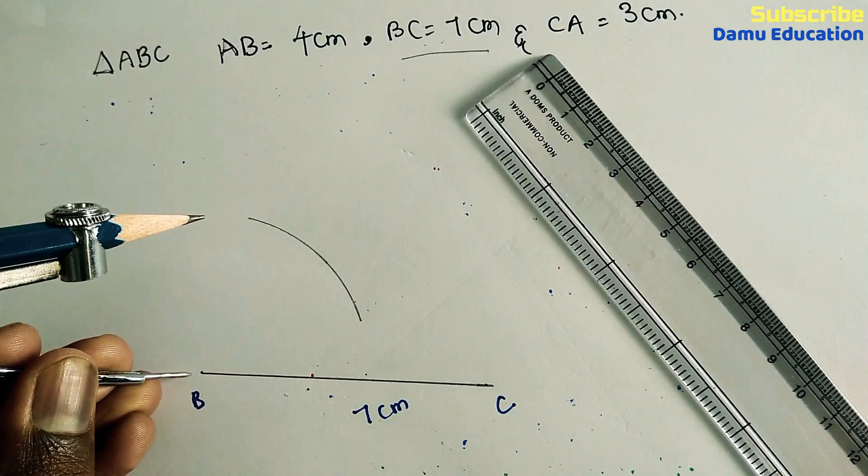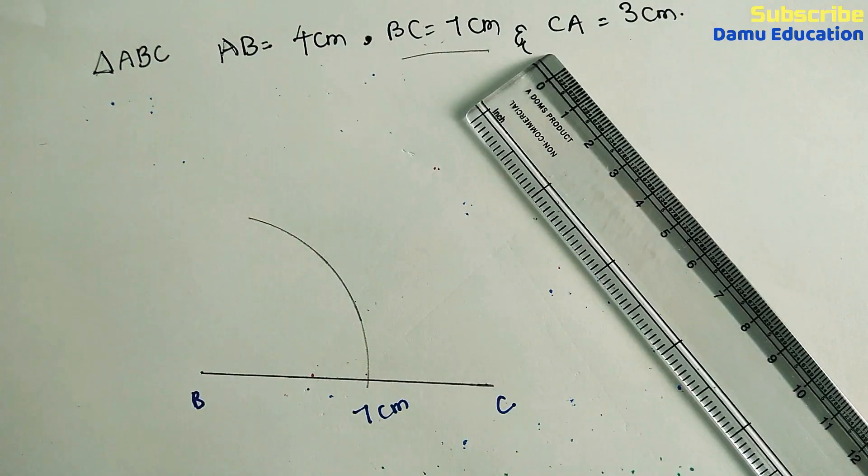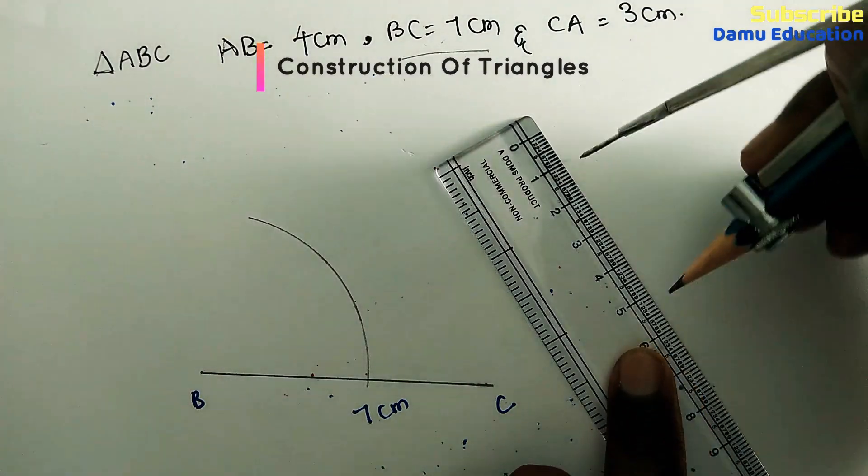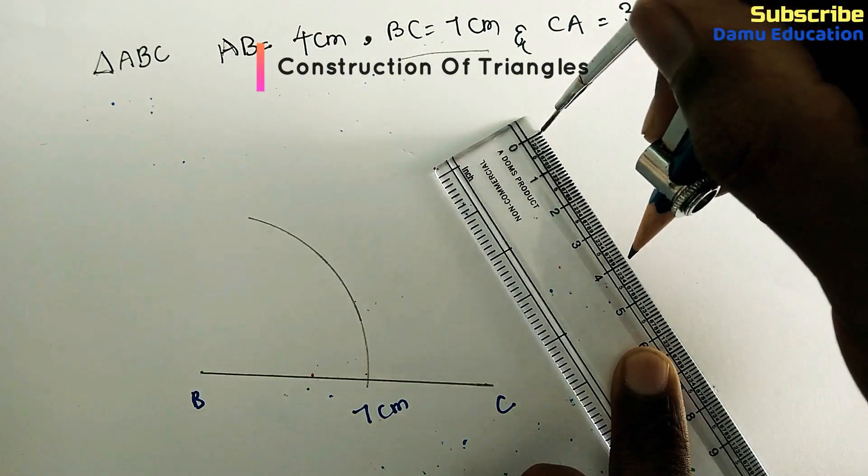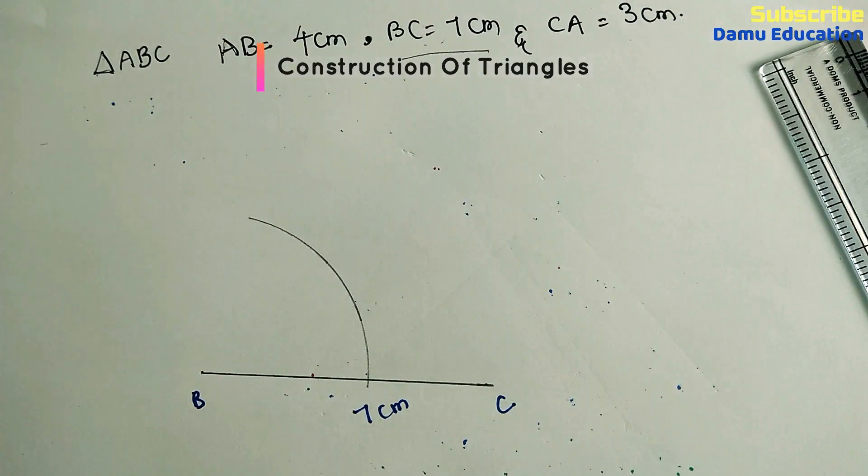Make sure that you place 0 and 3. CA is 3 centimeters, so place it at 0 and 3.